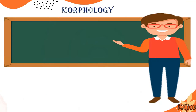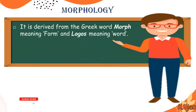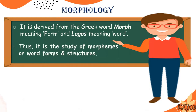What is morphology? The word morphology is derived from the Greek word morph, meaning form, and logos, meaning word. Thus, it is the study of morphemes or word forms and structures. All the morphemes, word forms, and structures in language is what is known as morphology.